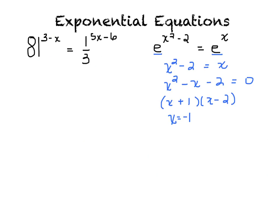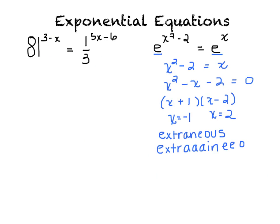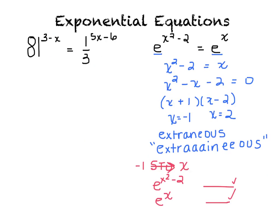Now I have my solutions: x is negative one or x is positive two. Now the easiest way to check these for extraneous solutions — let's learn how to spell extraneous, it is not 'x-train-us' like someone put on a quiz. I'm going to store negative one as x, then type in e to the x squared minus two and e to the x — these two answers better be the same. If not, that would be extraneous. I'll do the same thing with two stored as x.